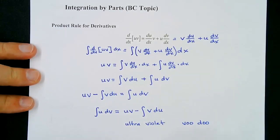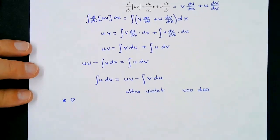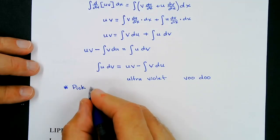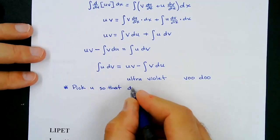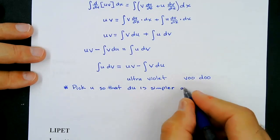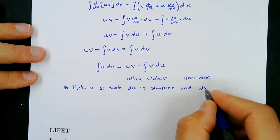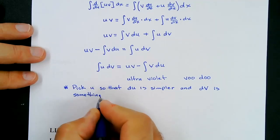Now, how do you pick what u is? We need to know what to let u be and what to let dv be. The guidelines: pick u so that du is simpler — so when we take the derivative, it becomes something simpler. And pick dv to be something that's easy to integrate.